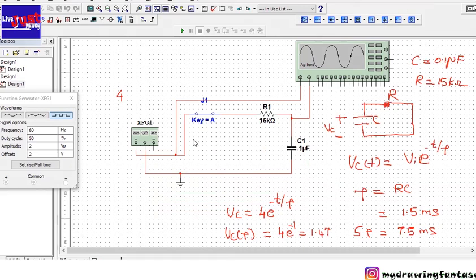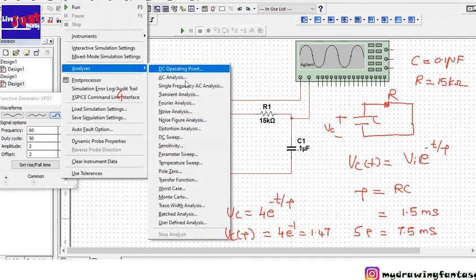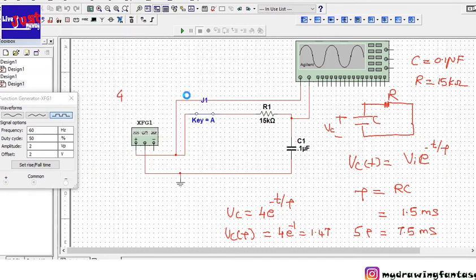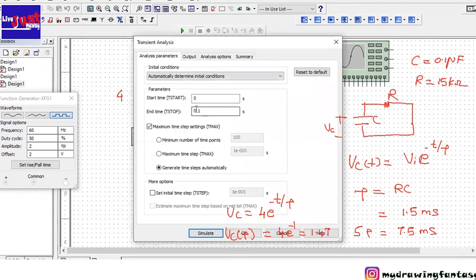The system parameter remains same as the last practical. Now we will go to the simulate, analyzes, then transient analyze. We can do this for 0.01 second, then simulate.